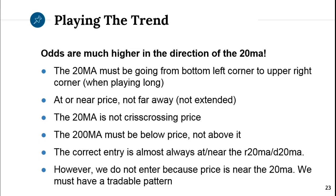When the 20 and price are both above the 200-period moving average, the correct entry is almost always near the 20MA. However, we don't enter just because price is near the 20 — we have to have a tradable pattern. We look for a tradable pattern in the right location, at or near the 20, and then we can enter.